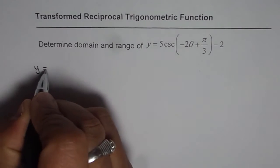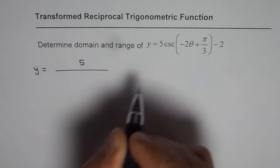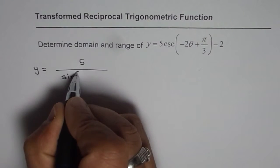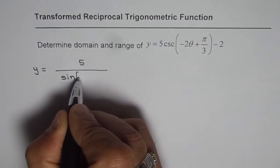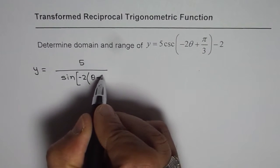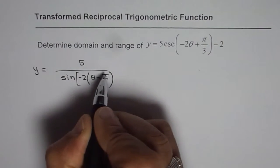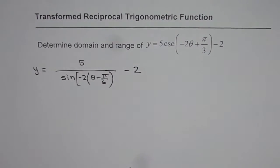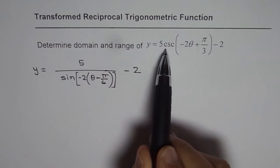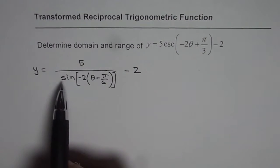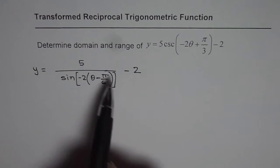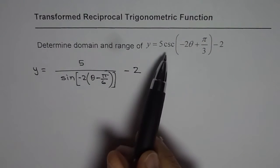Let me rewrite this function. Since cosecant is 1 over sine, we can write y equals 5 divided by sine of (minus 2 theta plus pi by 3). Taking minus 2 as a common factor, we get y equals 5 divided by sine of minus 2 times (theta minus pi by 6), since dividing pi by 3 by 2 gives pi by 6. Cosecant is 1 over sine.